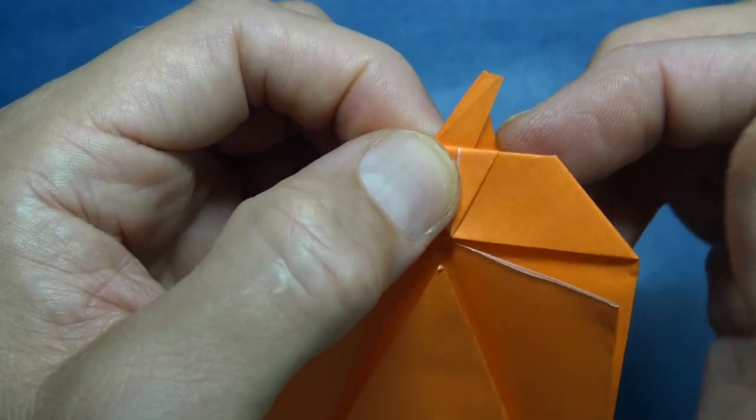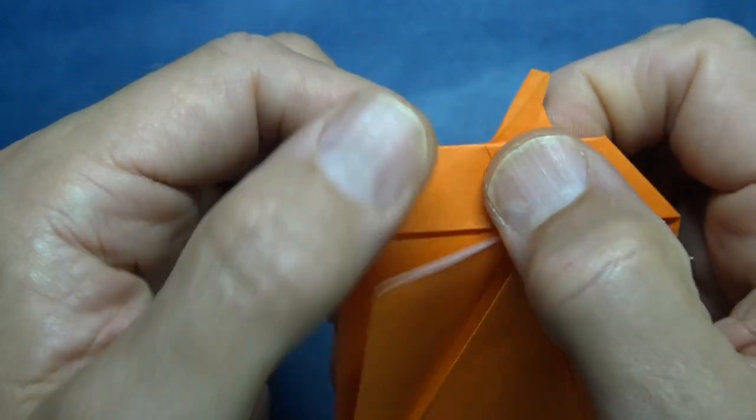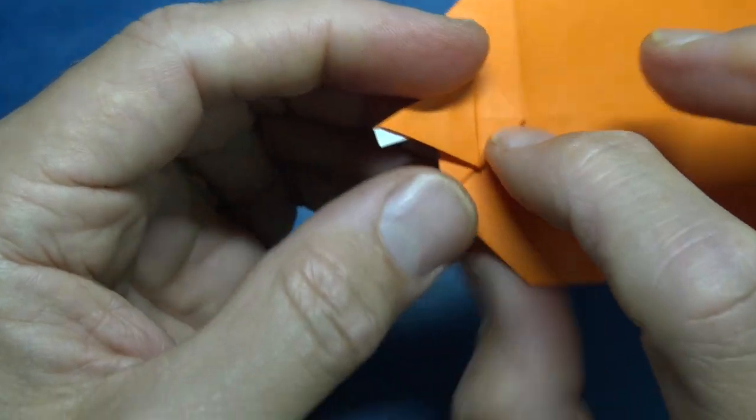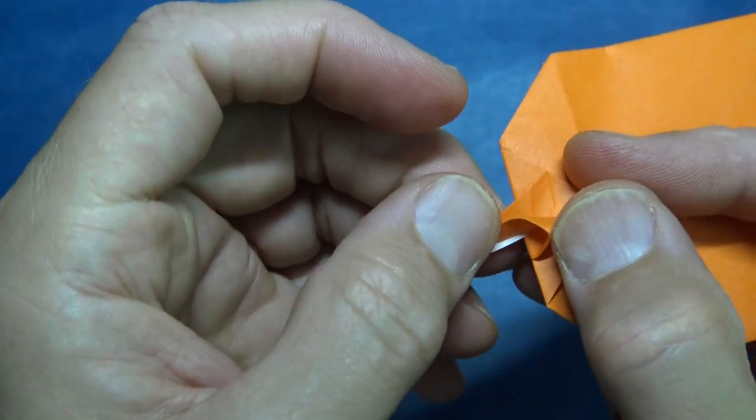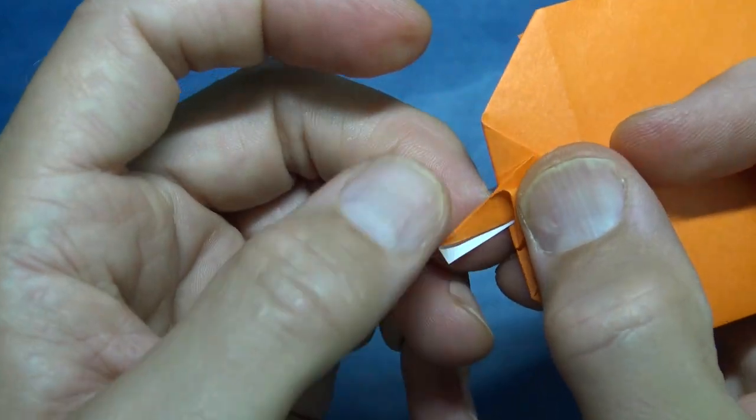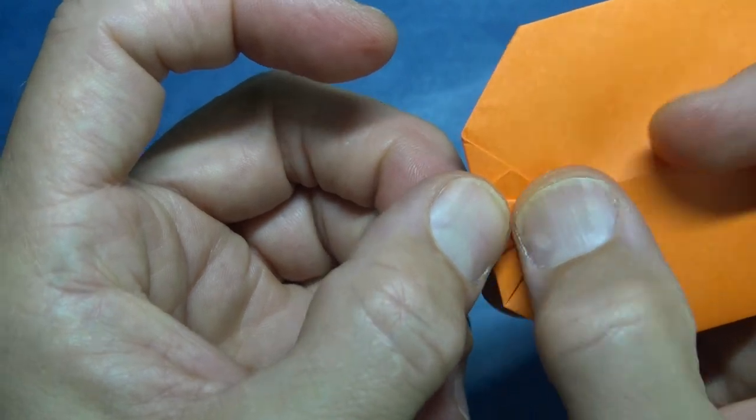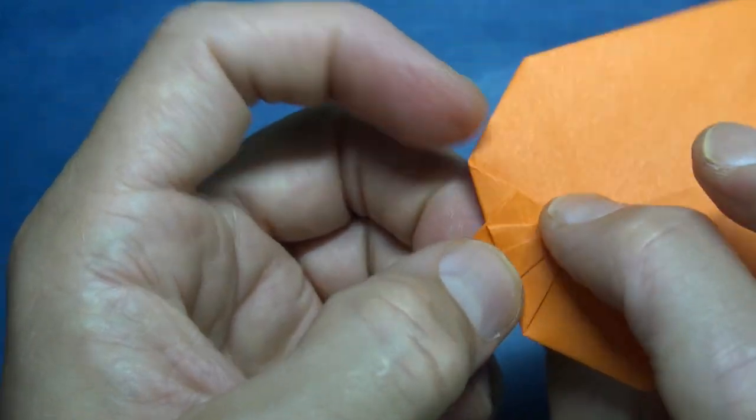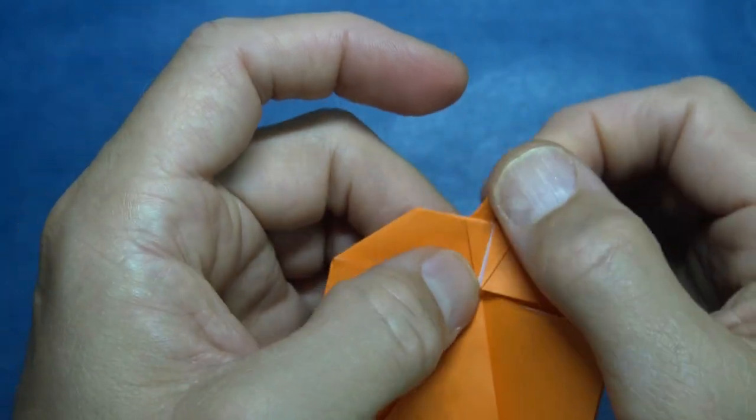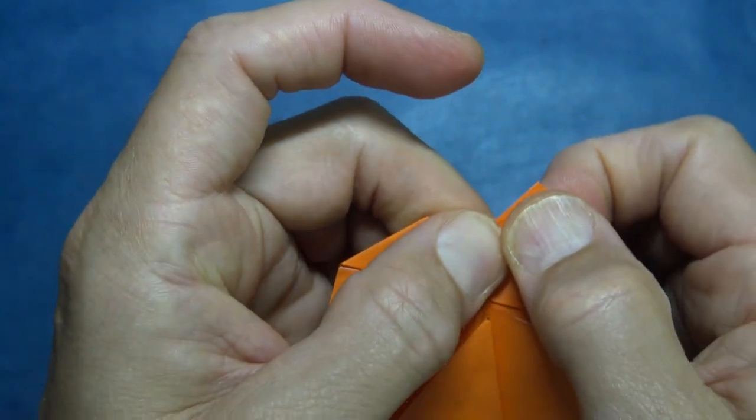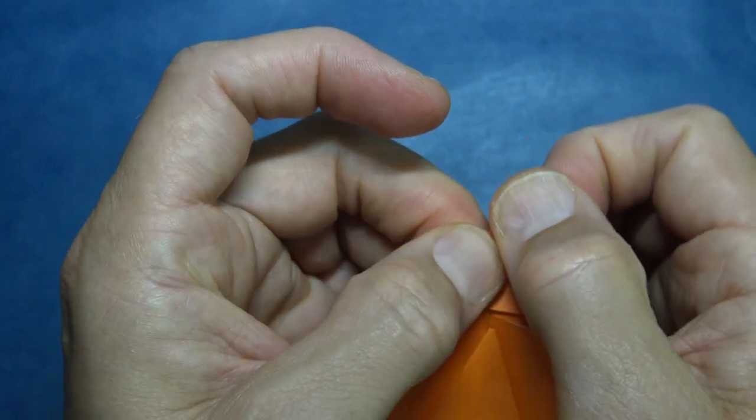And there's this little paper right here that doesn't look good. So we're going to try to get rid of that by turning it over. And now open this pocket and squash. Like that. There's the stem, adjust it however you want it.